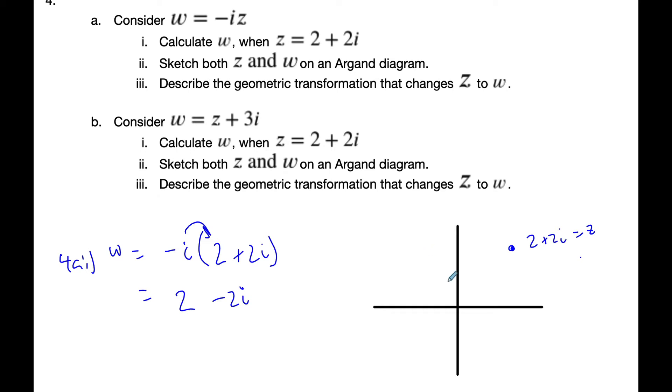And then I know w is down here. I go 2 minus 2i. This is w, which is equal to 2 minus 2i. And if I think about what happened here, and I know here is my complex number, I've sketched them both. Describe the geometric transformation that changes z to w.